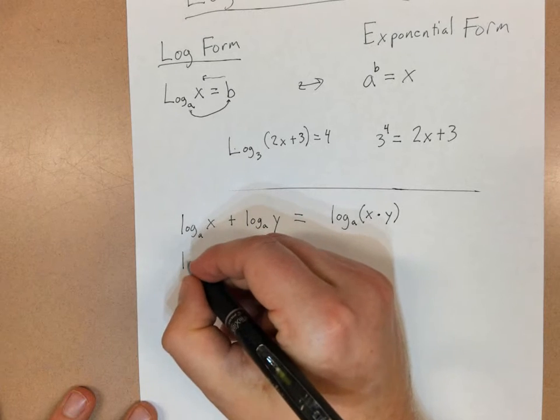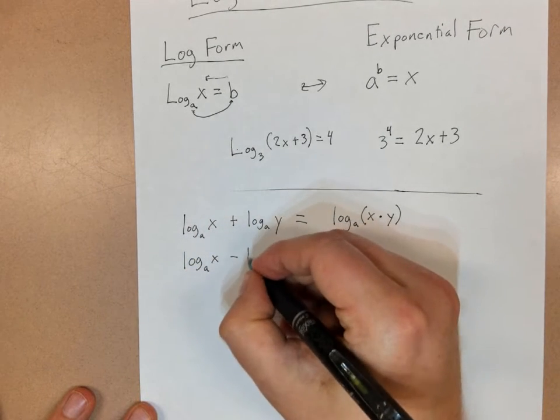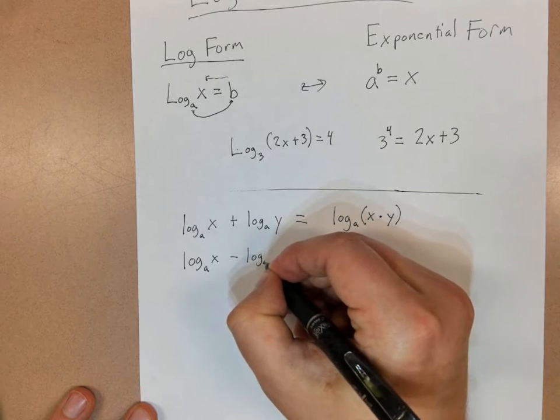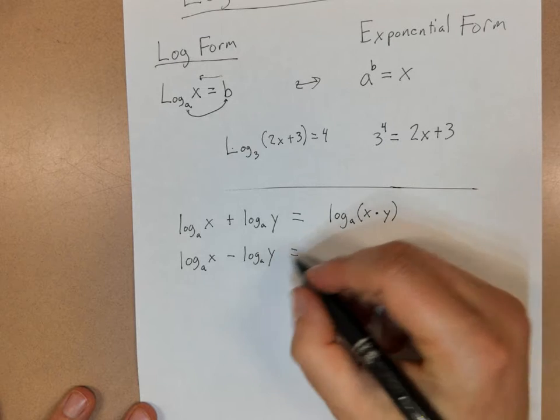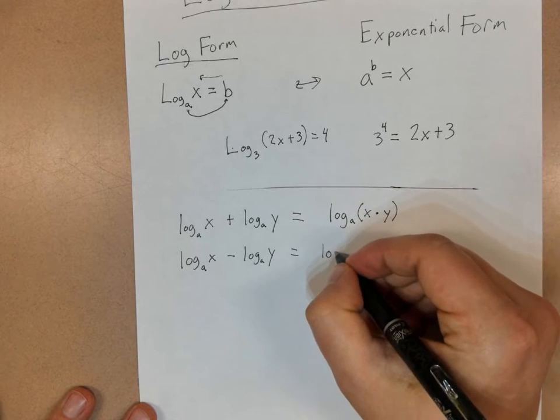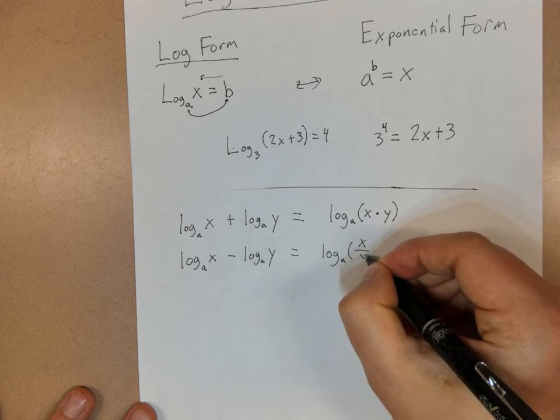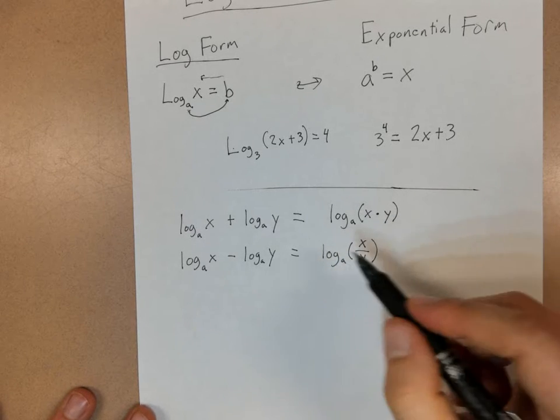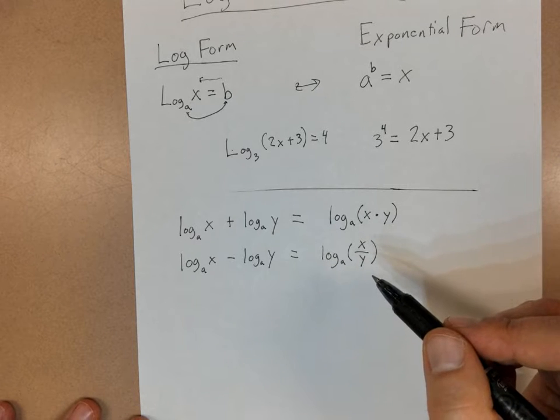It's the same thing, or similar thing for subtraction. If I have log base A of x minus log base A of y, you can imagine if we're adding, we would multiply them. So if we're subtracting, we would divide. So it would be log base A of x divided by y. And again, know how to go back and forth between those, because that's going to be part of expanding and condensing logs.